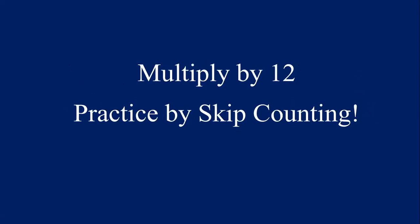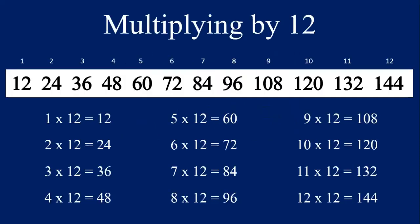Now let's practice multiplying by the number twelve — our last one. First, let's practice by skip counting. Say these with me. Twelve, twenty-four, thirty-six, forty-eight, sixty, seventy-two, eighty-four, ninety-six, one hundred and eight, one hundred and twenty, one hundred and thirty-two, and one hundred and forty-four.